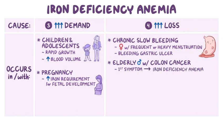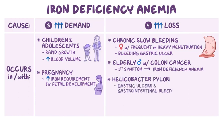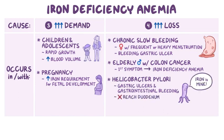Another cause of iron deficiency is Helicobacter pylori infection, which classically causes gastric ulcers and gastrointestinal bleeding. This bacteria also traps dietary iron for itself, preventing it from even reaching the duodenum. Finally, in developing countries, a common cause of blood loss is hookworms. These worms latch onto the intestines and suck out the blood.